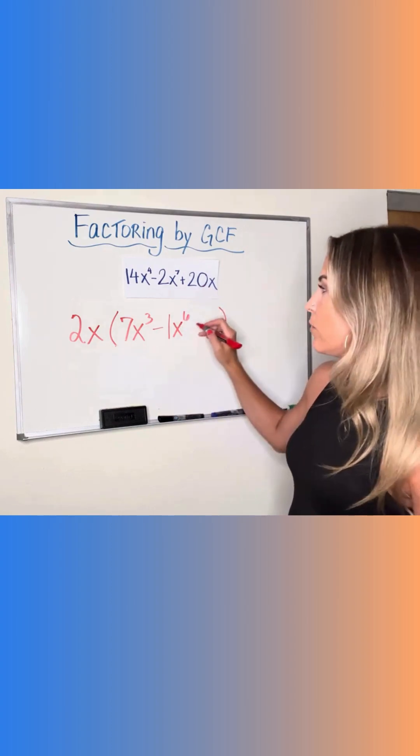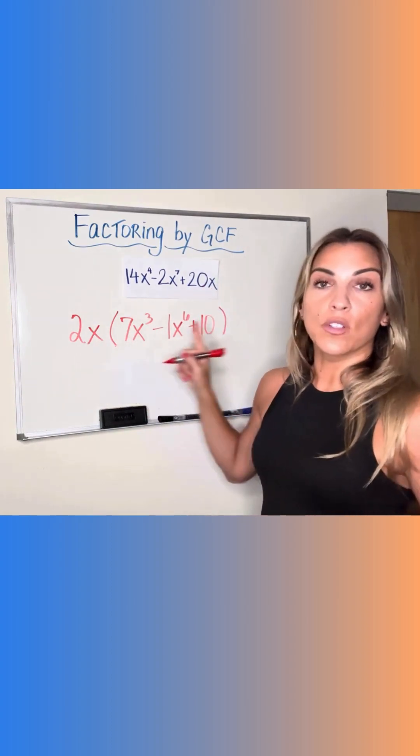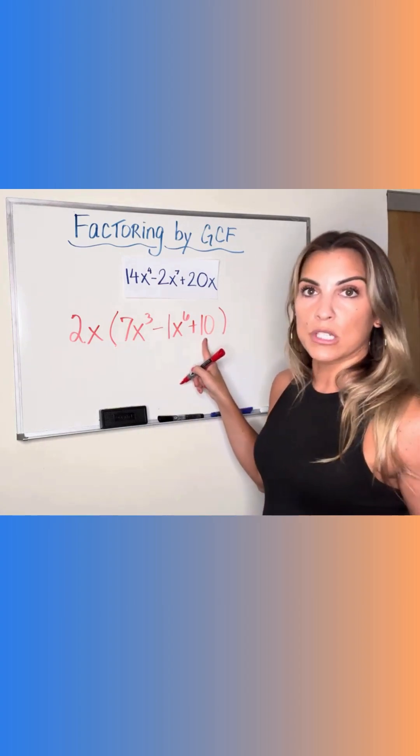And last term, 20 divided by 2 is positive 10. And x divided by x is just 1. So I don't need it because 10 times 1 would just be 10, right?